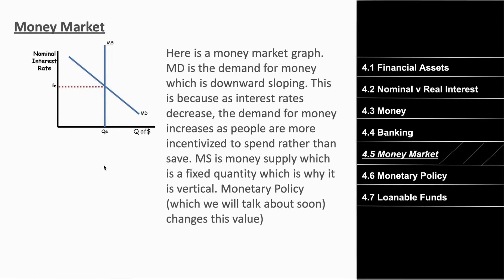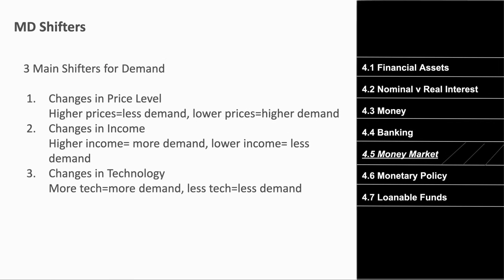The money supply graph shows how much money overall exists — it's typically fixed, a vertical line. The quantity of money stays the same. The equilibrium shows the quantity and demand for money at a specific interest rate. There are three main shifters for money demand: changes in price level, changes in income, and changes in technology.